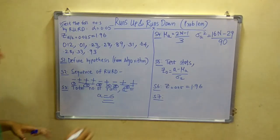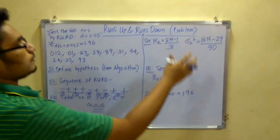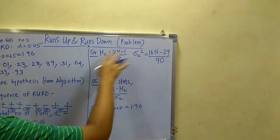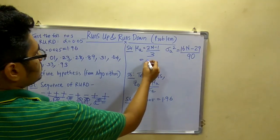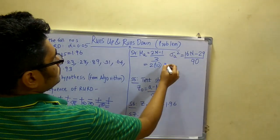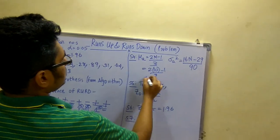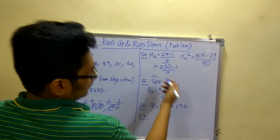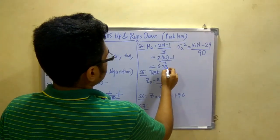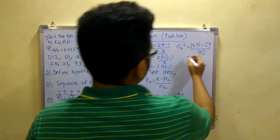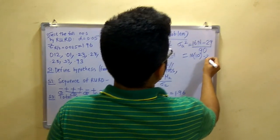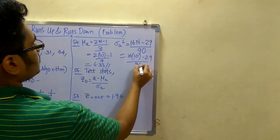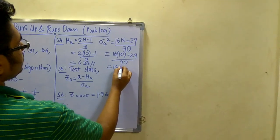Next, coming to computing the mean as well as the variance. You will put the value of n, that is 10, in this. That is 2 into 10 minus 1 divided by 3, which comes out to be a value of 6.33. And the variance, that is 16 into 10 minus 29 upon 90, turns out to be 1.45.